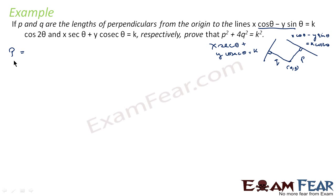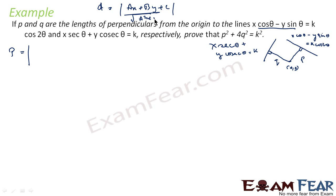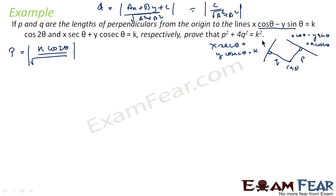p is nothing but the perpendicular distance from the origin (0, 0) to the first line. Using the distance formula d = |ax + by + c| / √(a² + b²), since both x and y are 0, the numerator is just the constant term. So p = k·cos2θ divided by √(cos²θ + sin²θ).